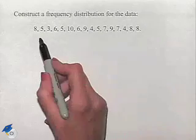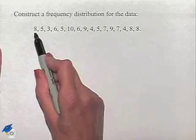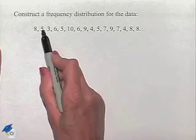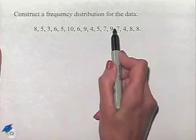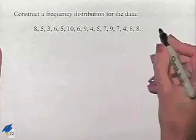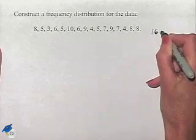Let's start off by counting up how many values we have in this list. We have 1, 2, 3, 4, 5, 6, 7, 8, 9, 10, 11, 12, 13, 14, 15, 16. So we know we have 16 different items.